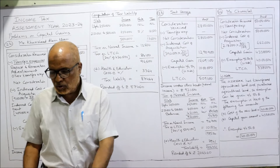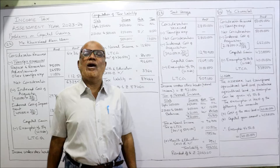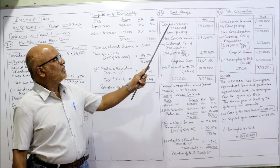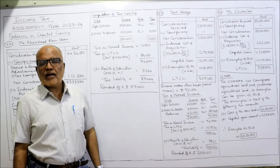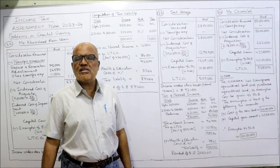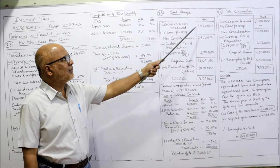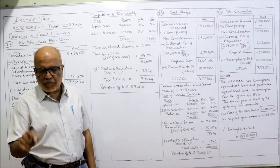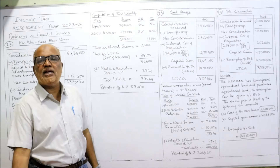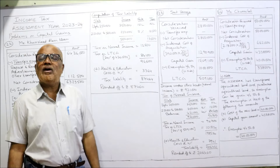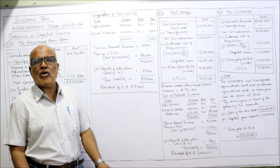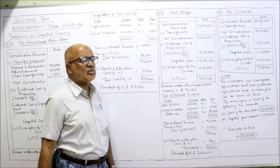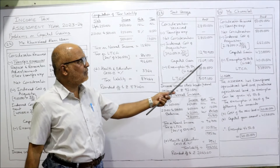First we compute the long-term capital gain for Srimati Vanaja. Consideration received: Rs. 28,00,000. No transfer expenses given, so net consideration is Rs. 28,00,000. Indexed cost of acquisition: purchased 16 years ago for Rs. 3,90,000. FMV is not given, so we directly take cost of acquisition: Rs. 3,90,000 × 331 ÷ 100 = Rs. 12,90,900. Capital gain: Rs. 28,00,000 − Rs. 12,90,900 = Rs. 15,09,100.